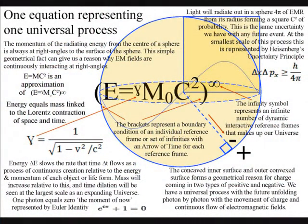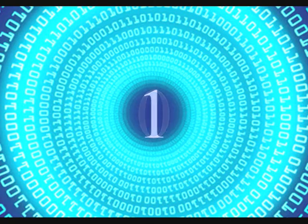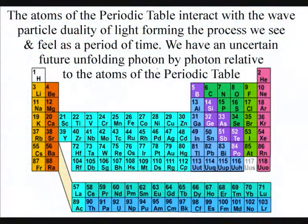Within such a theory the wave particle duality of light and matter in the form of electrons is acting like the bits or zeros and ones of a computer, forming an interactive process relative to the atoms of the periodic table.